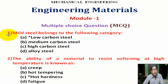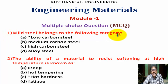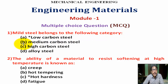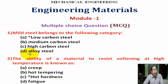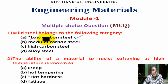Question number 1: Mild steel belongs to which following category? Option A: low carbon steel. Option B: medium carbon steel. Option C: high carbon steel. Option D: alloy steel. Correct answer is Option A — low carbon steel.